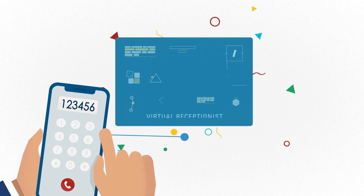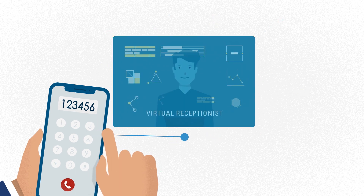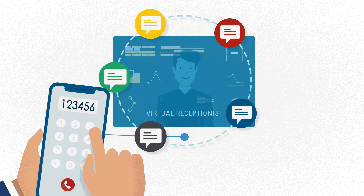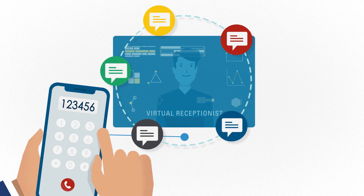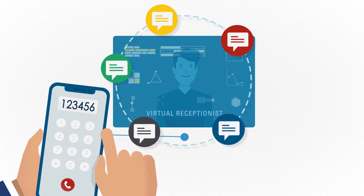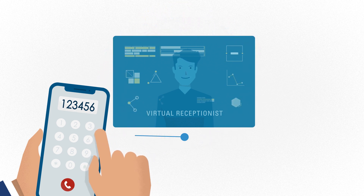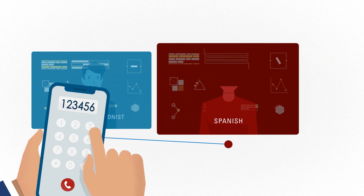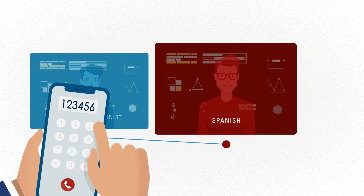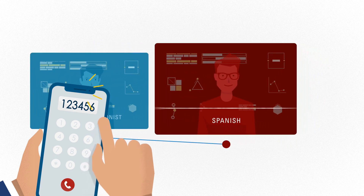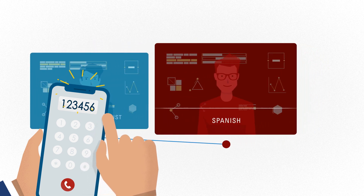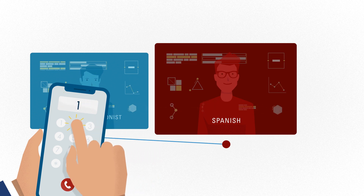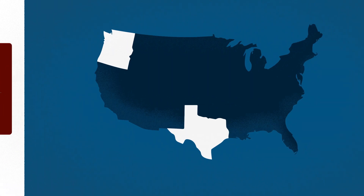Let's say you're a business that also wants to cater to Spanish speakers. Your callers can be directed into menu options spoken in any language you upload. And after the caller makes their selection, you can present them the next menu options — press 1 for English, press 2 for Español.